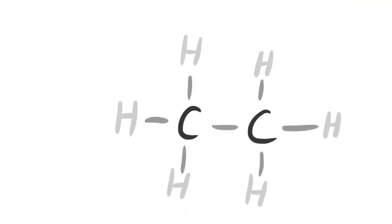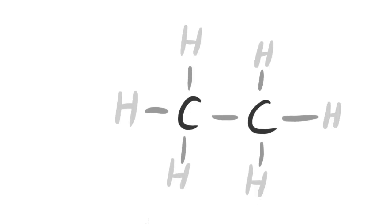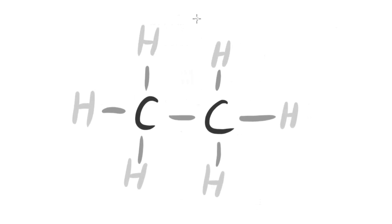I've got two example molecules here: ethane and ethanoic acid. Let's look at what the four different formulas would be for each molecule. The formula I have right here — you're probably familiar with this kind of structure for representing a molecule — this is called a displayed formula. A displayed formula shows all the atoms present in the molecule and all of the bonds between those atoms. You can see we've got single bonds between the carbons and the hydrogens.